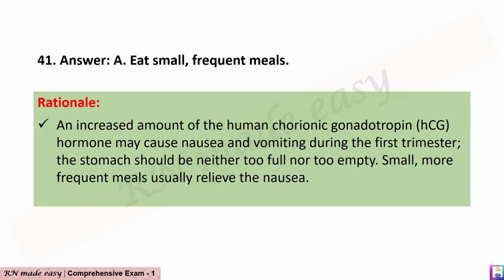The correct answer is A: Eat small, frequent meals. Rationale: An increased amount of the human chorionic gonadotropin (HCG) hormone may cause nausea and vomiting during the first trimester; the stomach should be neither too full nor too empty. Small, more frequent meals usually relieve the nausea.